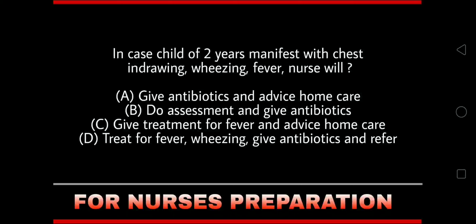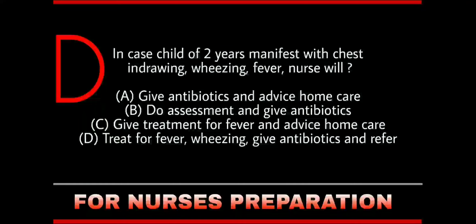In the case of a child of 2 years presenting with chest indrawing, wheezing, and fever, the nurse will — Option A: give antibiotics and advise home care; Option B: do assessment and give antibiotics; Option C: give treatment for fever and advise home care; Option D: treat for fever and wheezing, give antibiotics and refer. The right answer is Option D: treat for fever, wheezing, give antibiotics and refer.